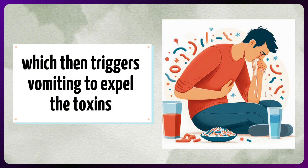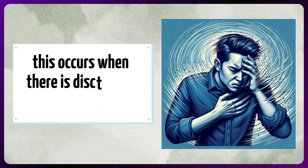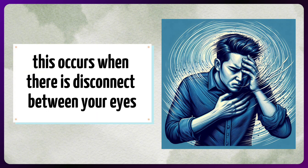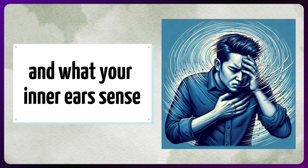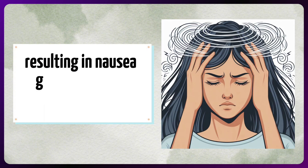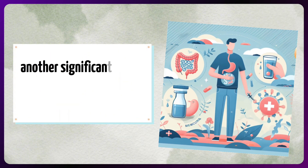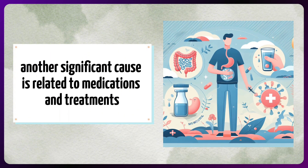The next cause is motion sickness. This occurs when there is a disconnect between what your eyes see and what your inner ears sense. The brain gets confused by these mixed signals, resulting in nausea and sometimes vomiting.